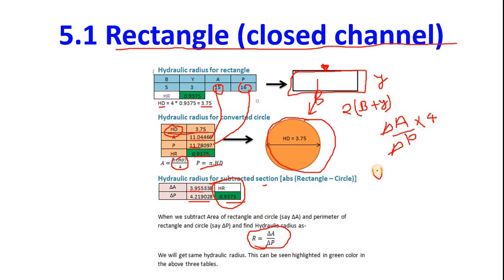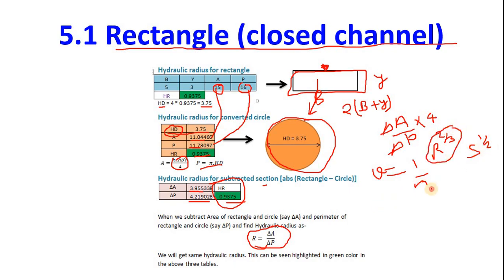Same hydraulic radius means same velocity. For an open channel, velocity is given by Manning's equation: V = (1/n)·R^(2/3)·S^(1/2). Keeping R constant, and with n and S constant, we get the same velocity V. This principle works for both open and closed channels.